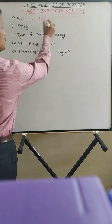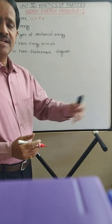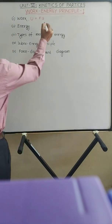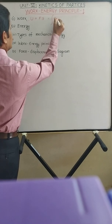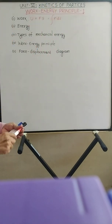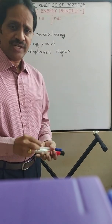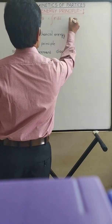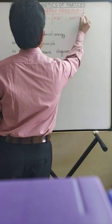If the force is variable — if the force is changing and varying with respect to the displacement — then the work done is the integration of F·dS, that is force into displacement. The SI unit is Newton meter, also known as joule.